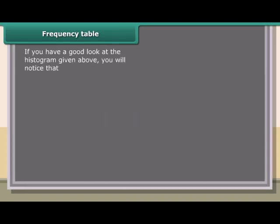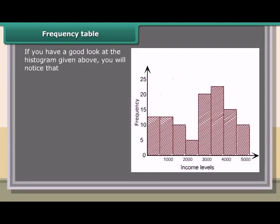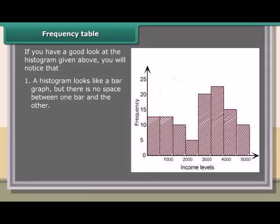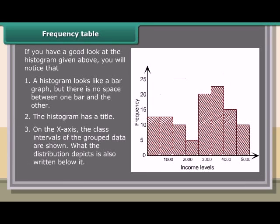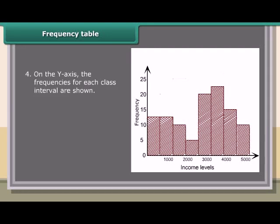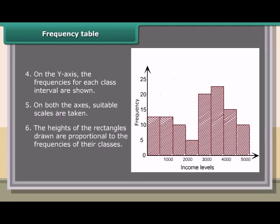If you look at the histogram, you will notice: a histogram looks like a bar graph, but there is no space between one bar and the other. The histogram has a title. On the x-axis, the class intervals of the grouped data are shown, and what the distribution depicts is written below it. On the y-axis, the frequencies for each class interval are shown. On both axes, suitable scales are taken, and the heights of the rectangles are proportional to the frequencies of their classes.